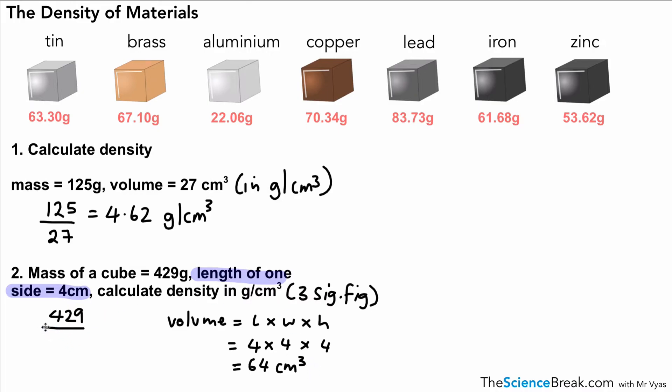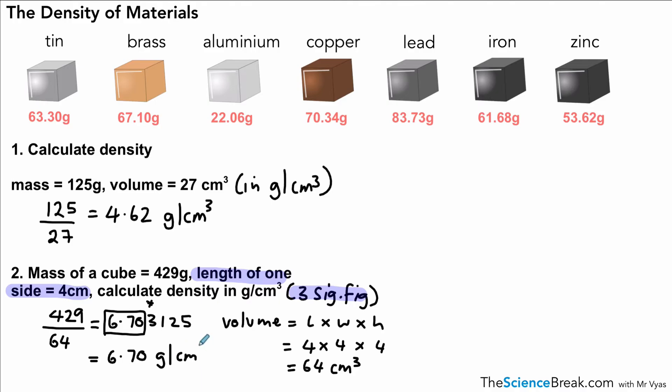There's our volume. We can put that on the bottom of our equation like that, 64. Now the number we get when we put that into the calculator is quite long: 6.703125. The question says we want the answer to three significant figures. So the way we would do that is take the first three numbers. We would need to look at the number after the zero. That is less than 5, so we wouldn't do any rounding. We would just call this 6.70, and it's a density, so it's grams per centimeters cubed.